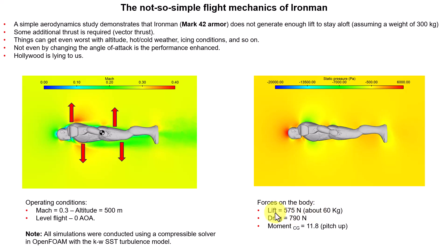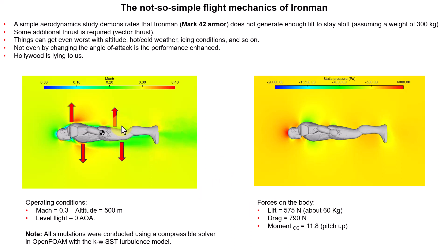The lift generated is very, very low — equivalent to about 60 kilos — so it's not enough to keep it flying. What's more interesting is that the drag is very high, giving a very low L/D ratio. From an aerodynamic point of view it's not efficient at all. We also see a very heavy pitch-up moment coefficient about the center of gravity. From this simple study, it doesn't fly. The conclusion is that Hollywood is lying to us. Even if you take the most conservative assumption — everything weighing 100 kilos — you are far from the required lift, and changing angle of attack doesn't help.